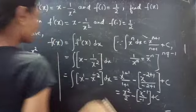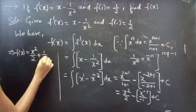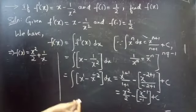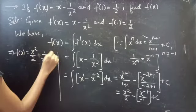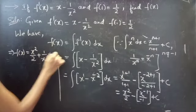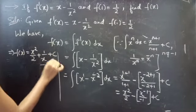Simplifying, x^(−1) can be written as 1 by x. So f(x) equals x squared by 2 plus 1 by x plus c. Consider this as equation number 1.